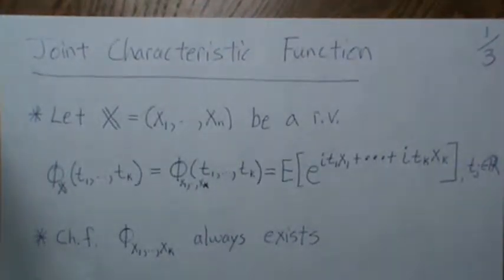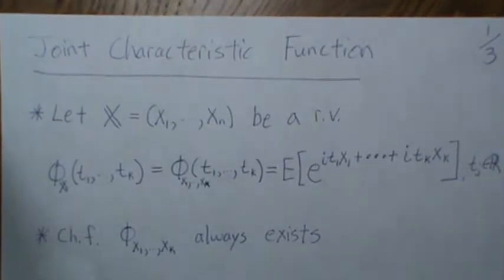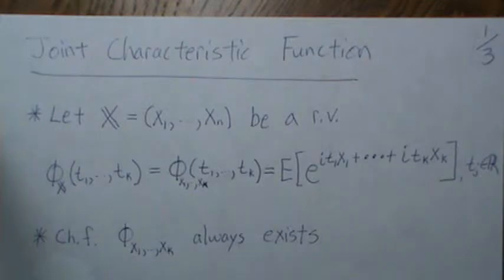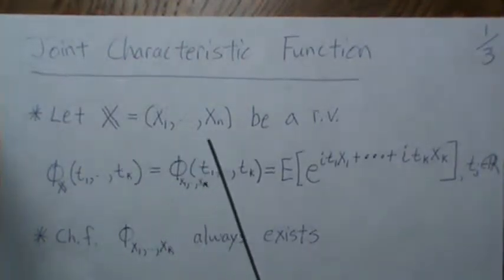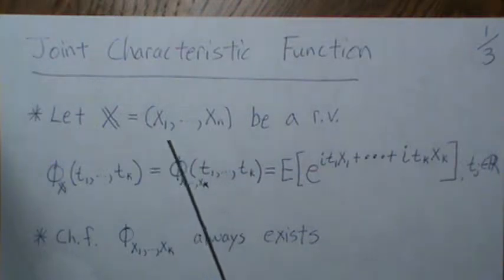Hello, in this video we're going to look at the joint characteristic function. It's really the characteristic function for a random vector as opposed to a random variable. We're going to let X be this random variable vector with random variables X1 through Xn.